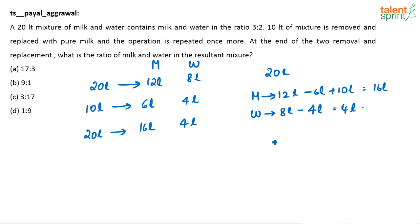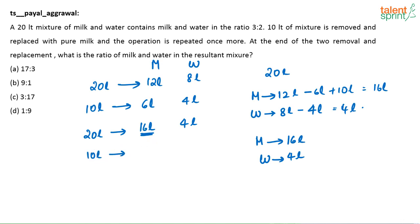This process is repeated once more — again I am taking 10 liters of the solution out. Now the amount of milk present is 16 liters and the amount of water is 4 liters, which is in the ratio 4:1. So 4/5 of the solution is milk and 1/5 is water. In the 10 liters being removed, 8 liters is milk and 2 liters is water.